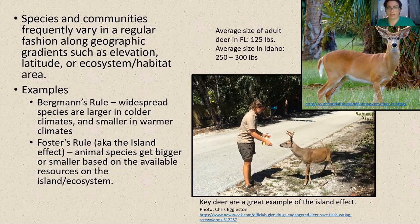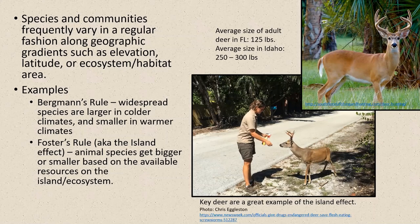For deer, there are two rules widely used in biogeography. The first is Bergmann's rule: widespread species in higher, more northern, or colder climates tend to be larger — mainly for conserving body heat — while species in warmer climates tend to be smaller. The average adult deer in Florida is about 125 pounds, but in Idaho it's 250 to 300 pounds. Then there's Foster's rule, the island effect, where animal species get bigger or smaller based on available island resources. Key deer are a prime example.